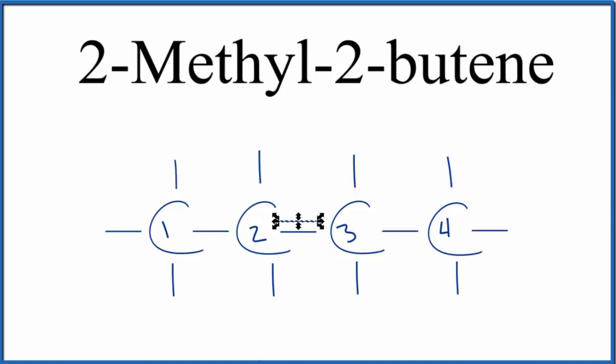The thing is, each carbon can only be bonded to four things. This carbon here right now has five bonds. Let's get rid of one of these hydrogens. And then here again, five bonds. Let's get rid of a hydrogen here. We now have 2-butene.